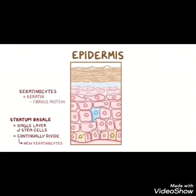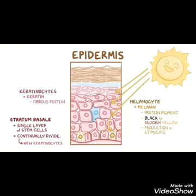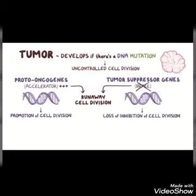Keratinocytes are continuously formed in stratum basale and migrate upward toward the epidermis. When sun rays fall on the skin, they send a signal to the melanocytes. Melanocytes then produce melanin — the more sun rays, the more melanin is produced. Melanin is the deciding factor for skin color. This melanin goes into vesicles and is taken up by keratinocytes, which carry it upward through the epidermis.